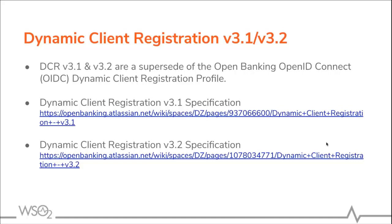This API supersedes the OpenBanking OpenID Connect dynamic client registration profile. The OpenBanking read-write API standard relies on FAPI read-write as a means for authentication of PSU and TPPs. To enable this capability, a TPP must register one or more clients with the ASPSP. The dynamic client registration API allows this to be carried out in a manner where a TPP can easily integrate and interact with the ASPSP.